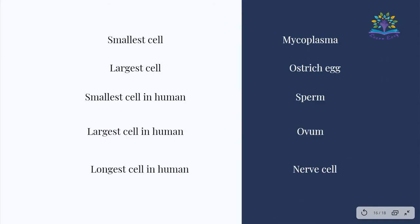The smallest cell is mycoplasma, and the largest cell is the ostrich egg. In humans, the smallest cell is the sperm, the largest cell is the ovum, and the longest cell is the human nerve cell.